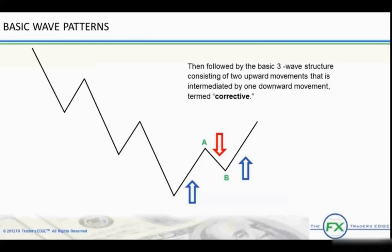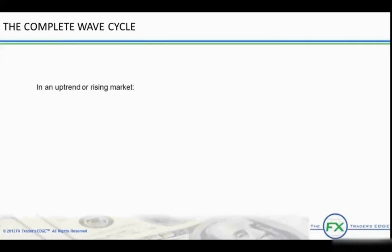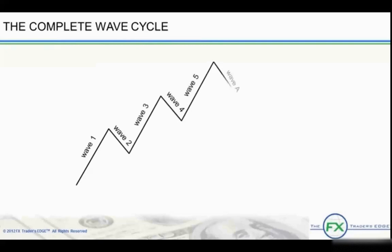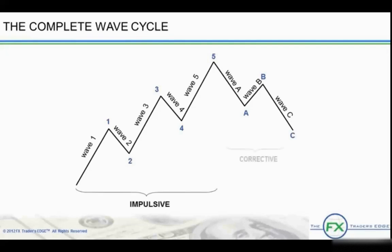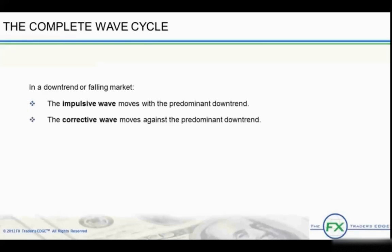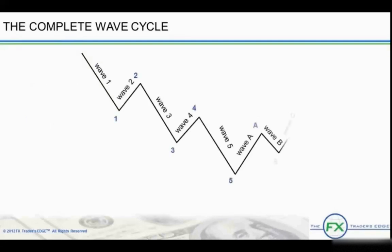The correction is lettered A, B, and C. In an uptrend or rising market, the impulsive wave moves with the predominant uptrend, and the corrective wave moves against the predominant uptrend. Can you spot the impulsive and corrective waves in this uptrending chart? In a downtrend or falling market, the impulsive wave moves with the predominant downtrend. We illustrate how the full sequence works equally in a falling market as it does in a rising one.